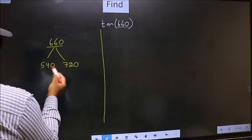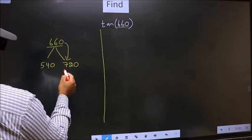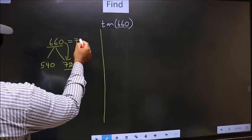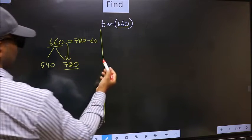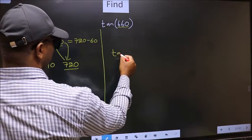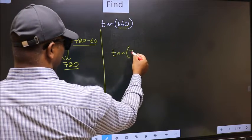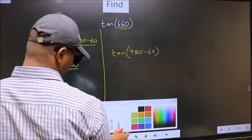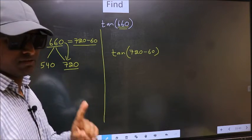Next, 660 is close to which number? This is close to 720. So, in place of this, now we should write 720 minus 60. So, this will become tan. In place of this, we should write this, 720 minus 60. This is your step 1.